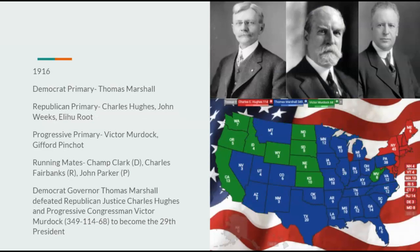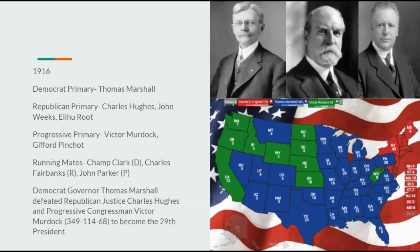Going on to the 1916 Election, Democrats would nominate Thomas Marshall and Champ Clark. Republicans would nominate Charles Hughes and Charles Fairbanks. Progressives would nominate Victor Murdoch and John Parker. Victor Murdoch would not be a great candidate — pretty milquetoast. Democrat Governor Thomas Marshall would defeat Republican Justice Charles Hughes and Progressive Congressman Victor Murdoch, 349 to 114 to 68, to become the 29th President. Hughes lost to Wilson in our timeline, and Marshall is a stronger candidate than Wilson.